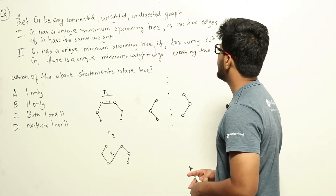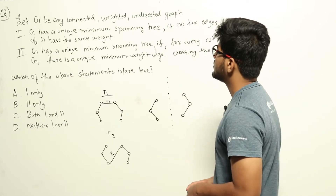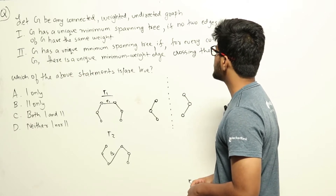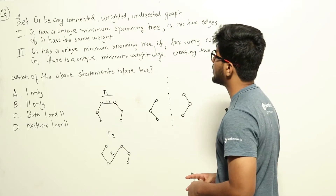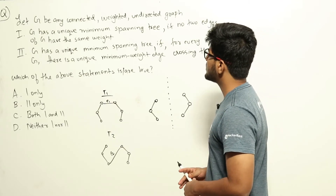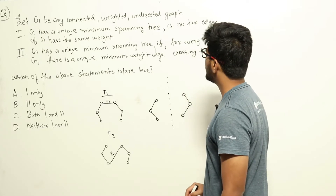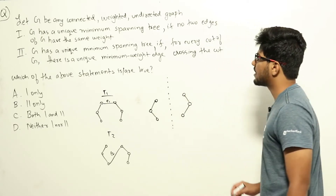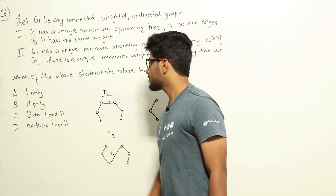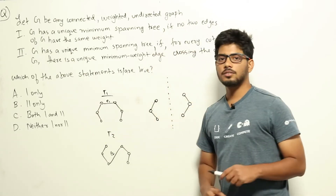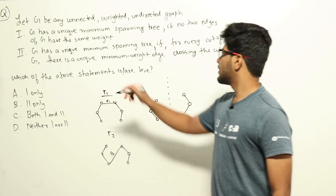Let G be any connected weighted undirected graph. Two statements: Statement 1 — G has a unique minimum spanning tree if no two edges of G have the same weight. Statement 2 — G has a unique minimum spanning tree if for every cut of G there is a unique minimum weight edge crossing the cut. Which of the above statements is or are true? This is a question from the algorithm section regarding minimum spanning trees.